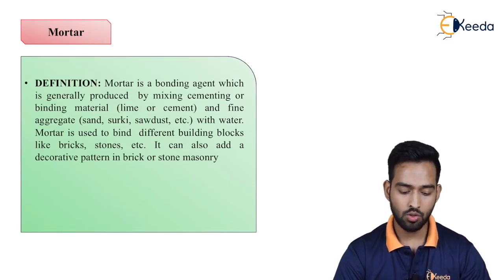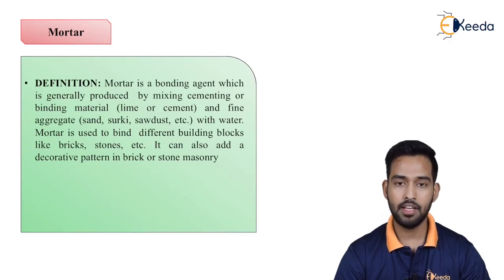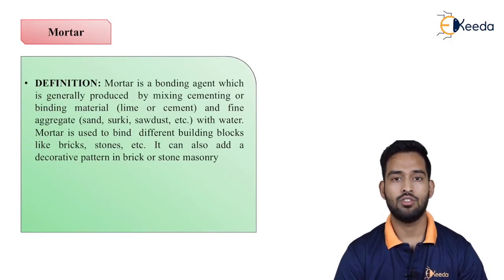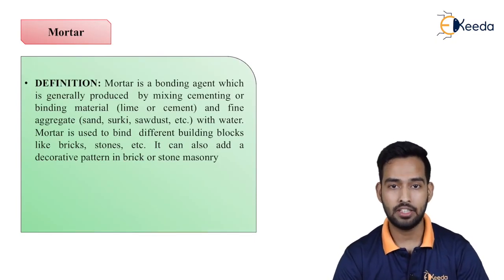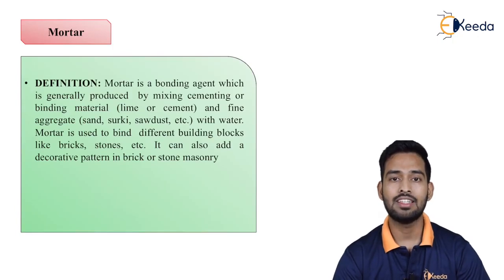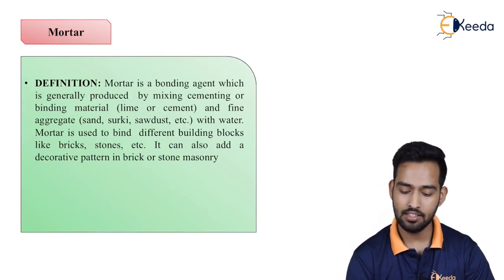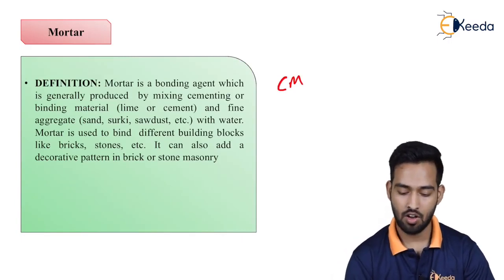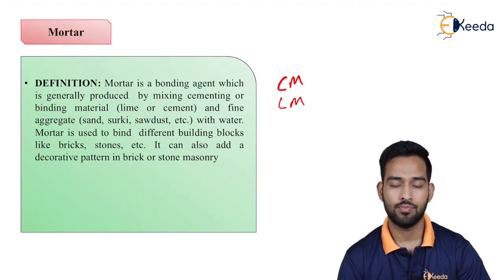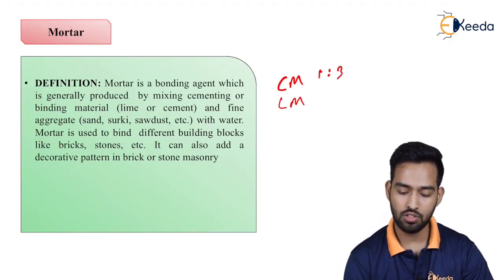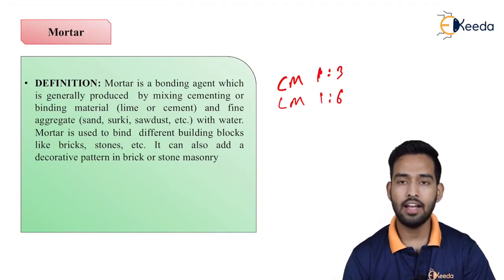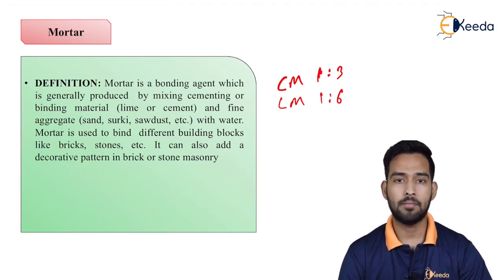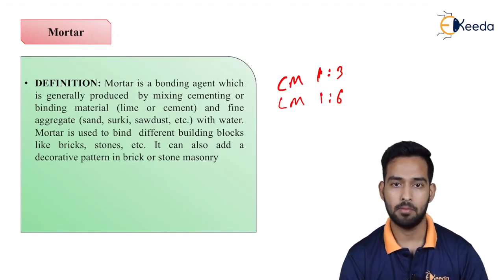It can also add a decorative pattern in brick or stone masonry. Generally, mortar is a binding material which can be made up of cement or lime combined with sand. It is known as CM — that is, cement mortar — or it can also be known as lime mortar. It should generally be in a ratio of 1:3 or 1:6, and it is useful for brick masonry or stone masonry for binding purposes.